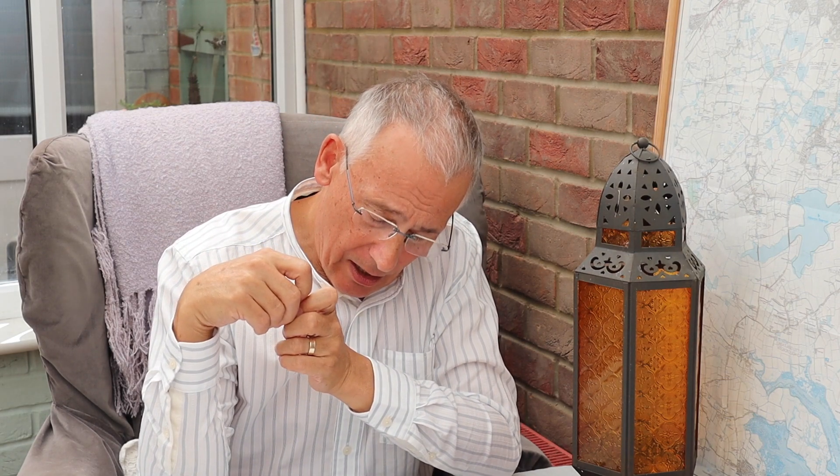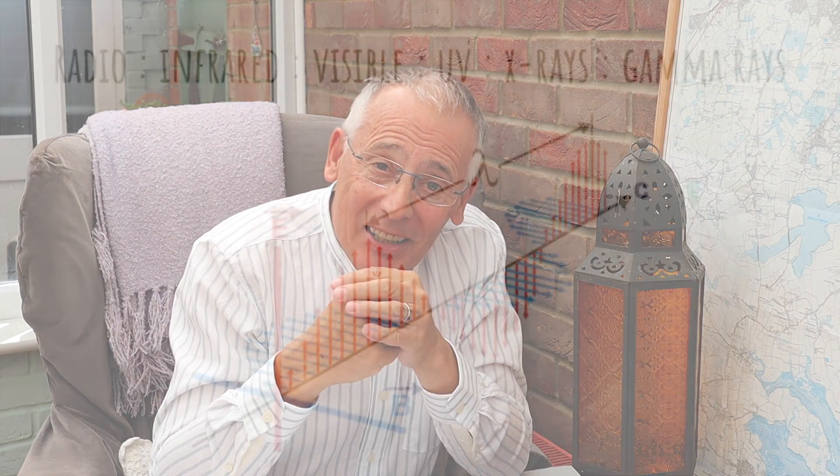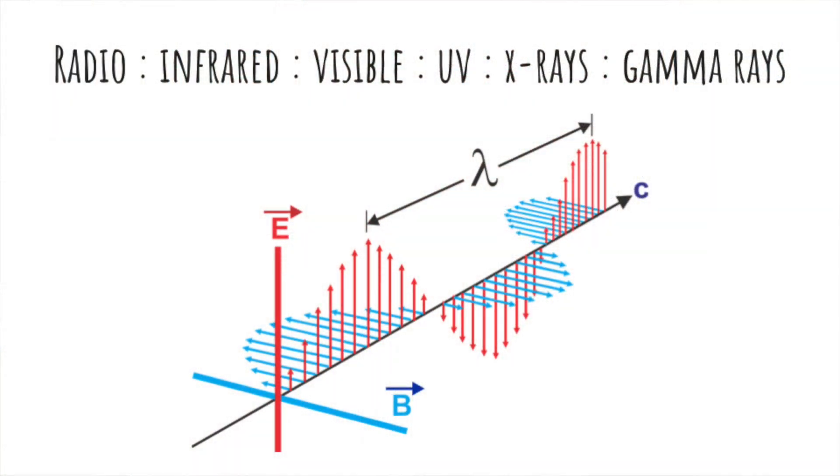Gamma radiation is not a particle — it's an electromagnetic wave. It moves at the speed of light and is very similar to X-rays. It has no charge and no mass. It can travel quite a long way — hundreds of metres, say 300, 400, 500 metres in air. Its ionising power is very low, but it is deeply penetrating and can only really be stopped by lead or some thick material.